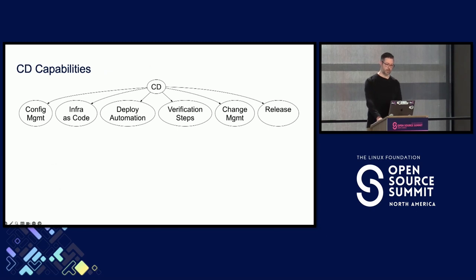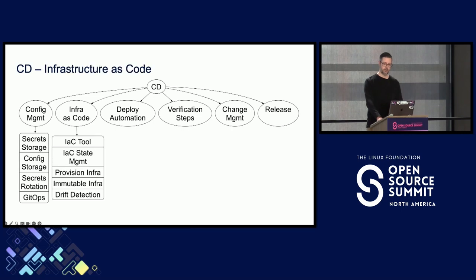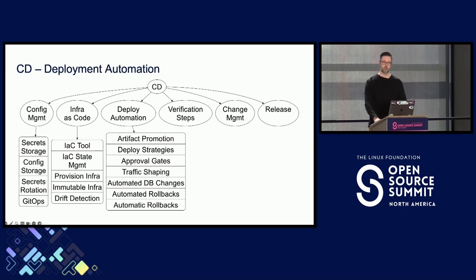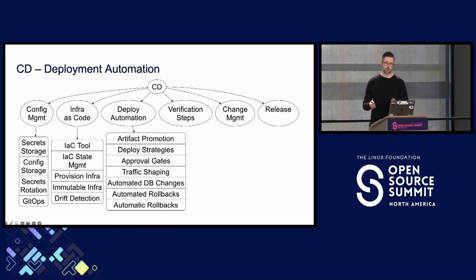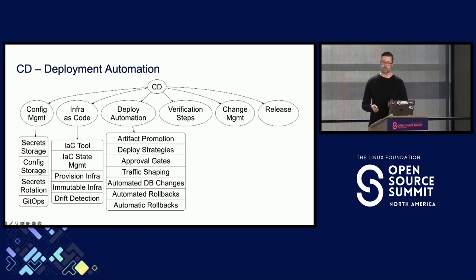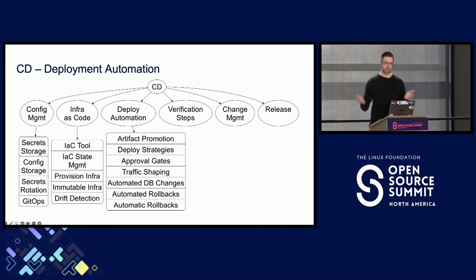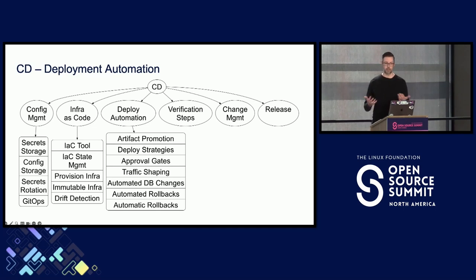Jumping into CD — we have config management: storing our secrets and configuration. We have infrastructure as code: we pick our tool, store the state somewhere, stand up our infrastructure. For deployments, we are promoting our artifact from one environment to the next — we build it once, deploy it many times, and pick a deployment strategy. For rollbacks, we've split it into two: automated rollbacks where a human is watching and deciding whether to roll back, and automatic rollbacks where a human isn't involved at all — a continuous deployment scenario where you commit code, go to lunch, and come back to find a rollback has happened.